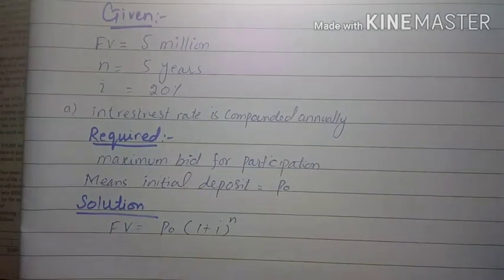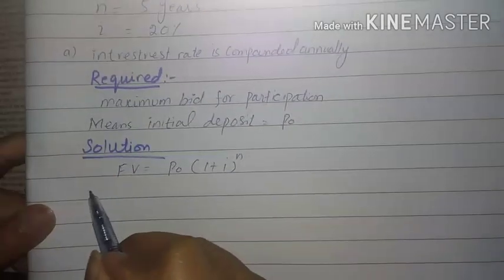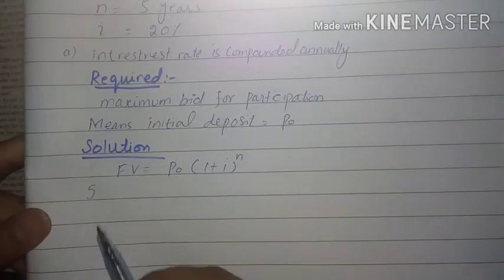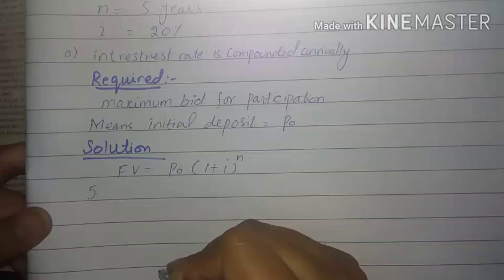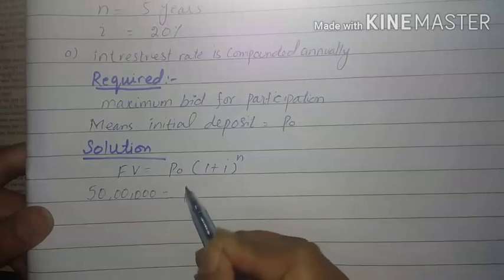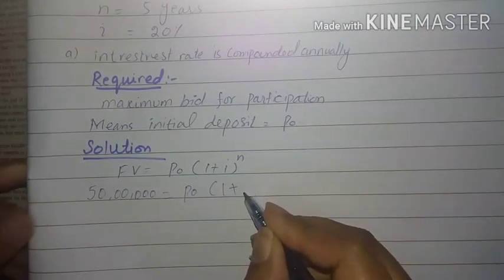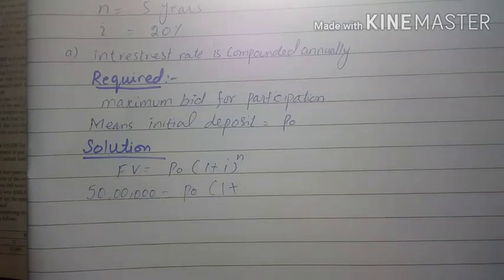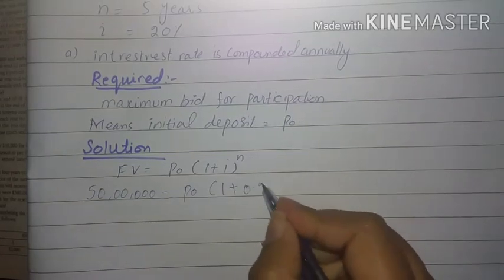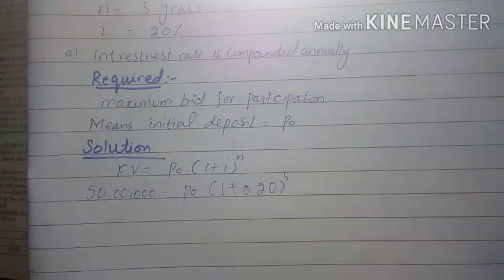For this we will put the formula: Future Value is equal to P0 times (1 plus i) raised to power n. The future value is 5 million given. One million is 10 lakhs, so 5 million is 50 lakhs. So 50 lakh is equal to P0 times (1 plus i). We have 20% given, so i = 20 divided by 100 = 0.20, and n is 5 years.